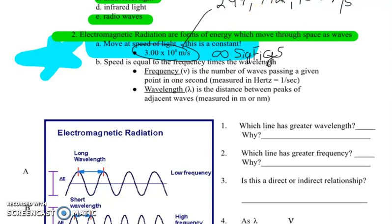Speed is equal to the frequency times the wavelength. Frequency is the number of waves passing a given point in one second, measured in hertz or one over a second. Wavelength is the distance between the peaks of adjacent waves, measured in meters or nanometers. This is really important. You should have covered this in pre-calc and trig. Make sure you really look at these examples and memorize what those mean.